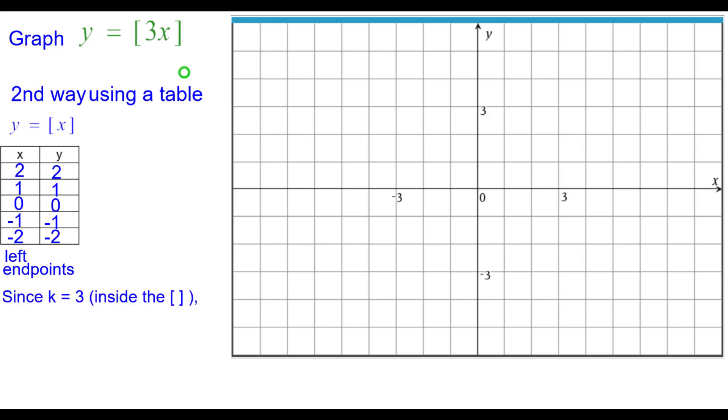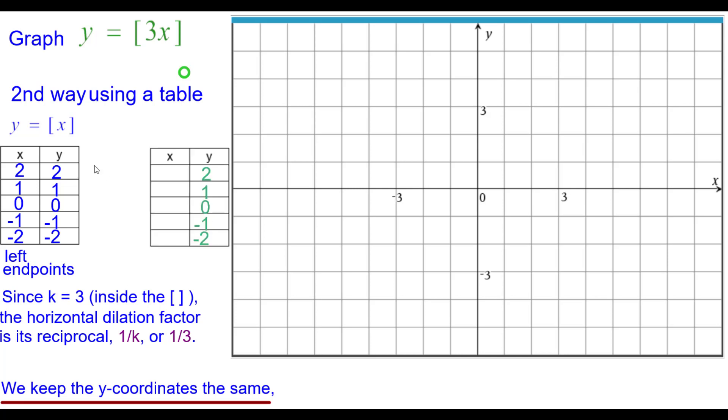Since k equals 3 inside the greatest integer brackets, the horizontal dilation factor is the reciprocal of 3, which is 1 third. And we're going to keep the y-coordinates the same, as you can see here, but we're going to multiply each x-coordinate by the reciprocal of k, which is 1 third.